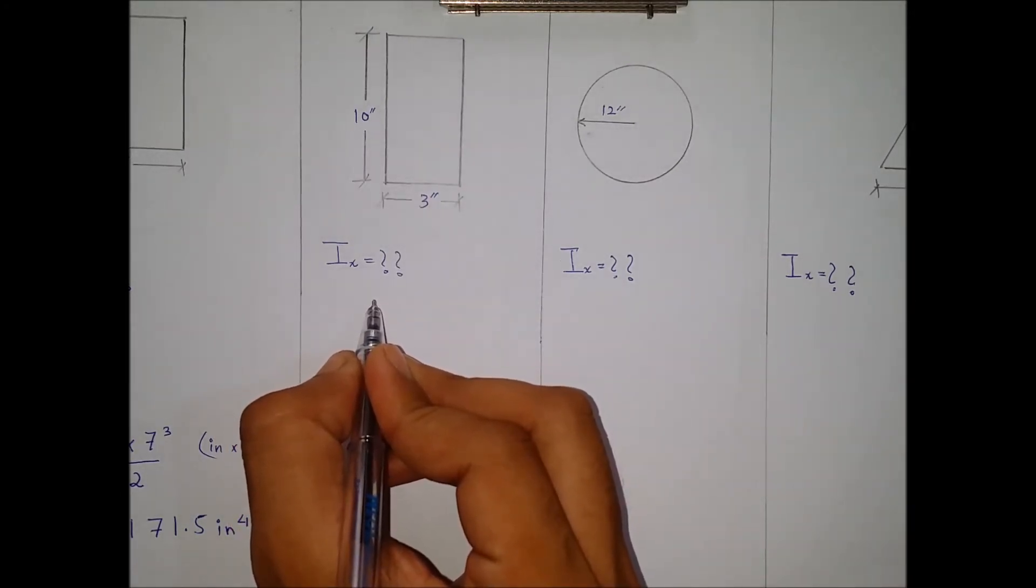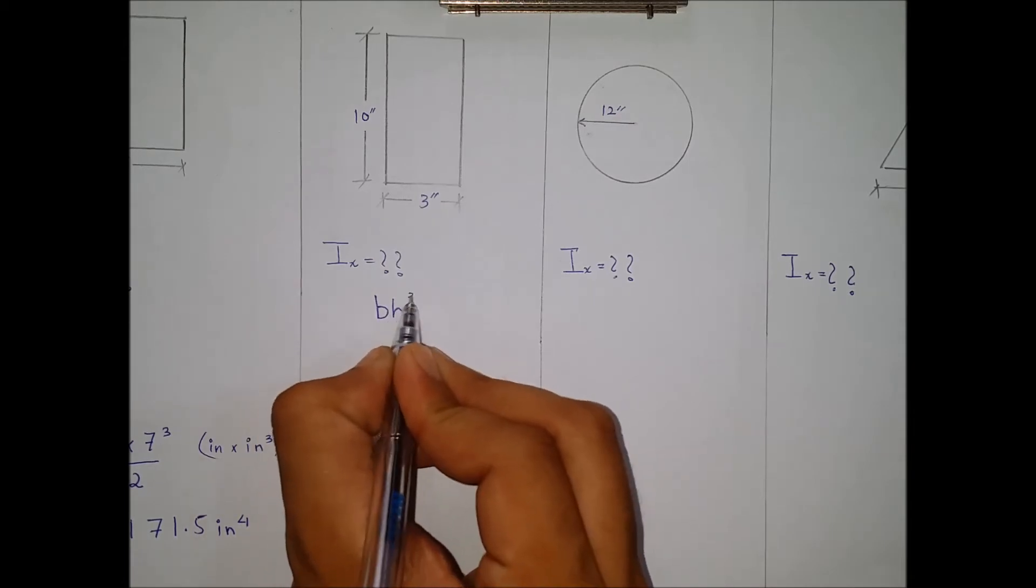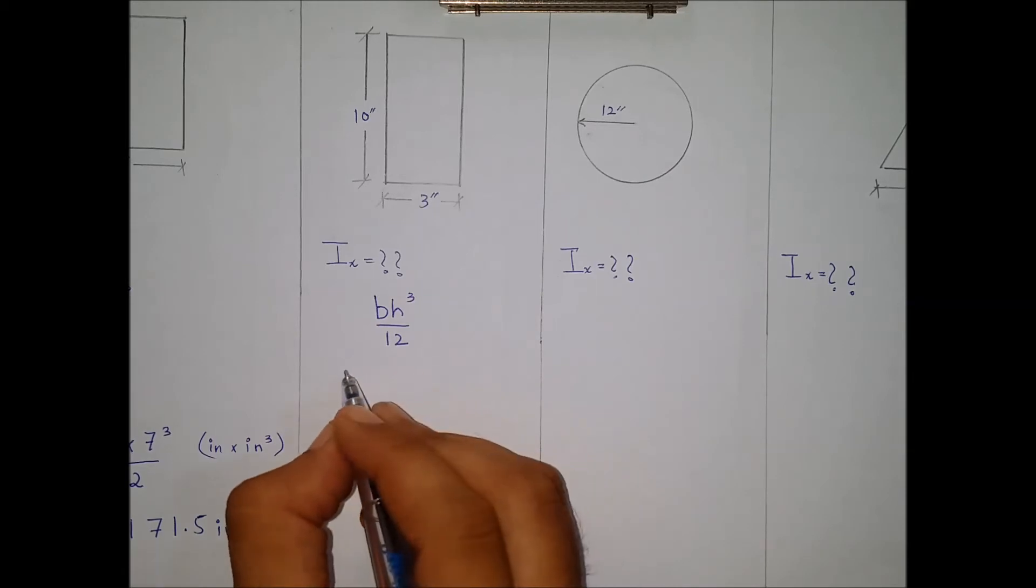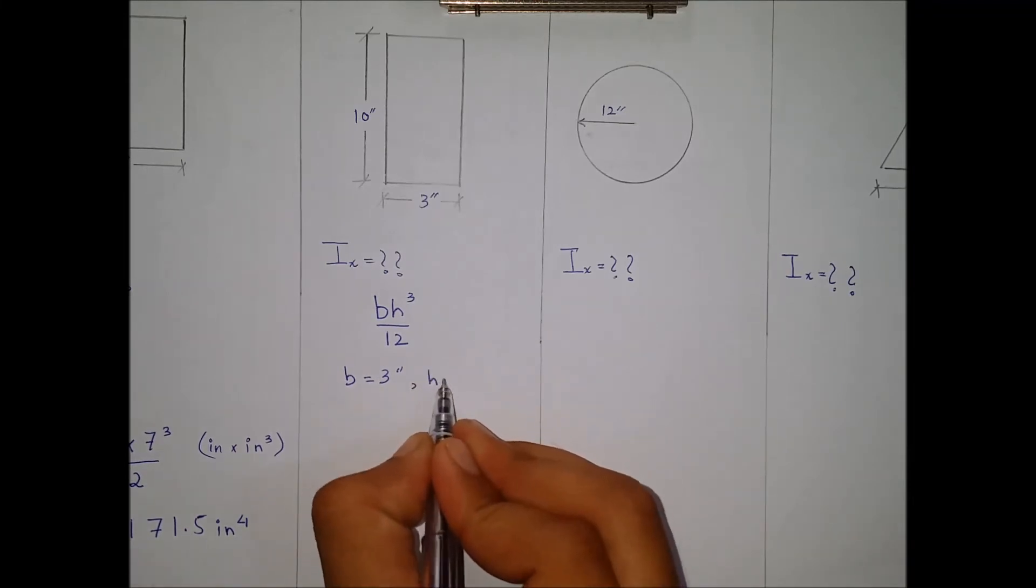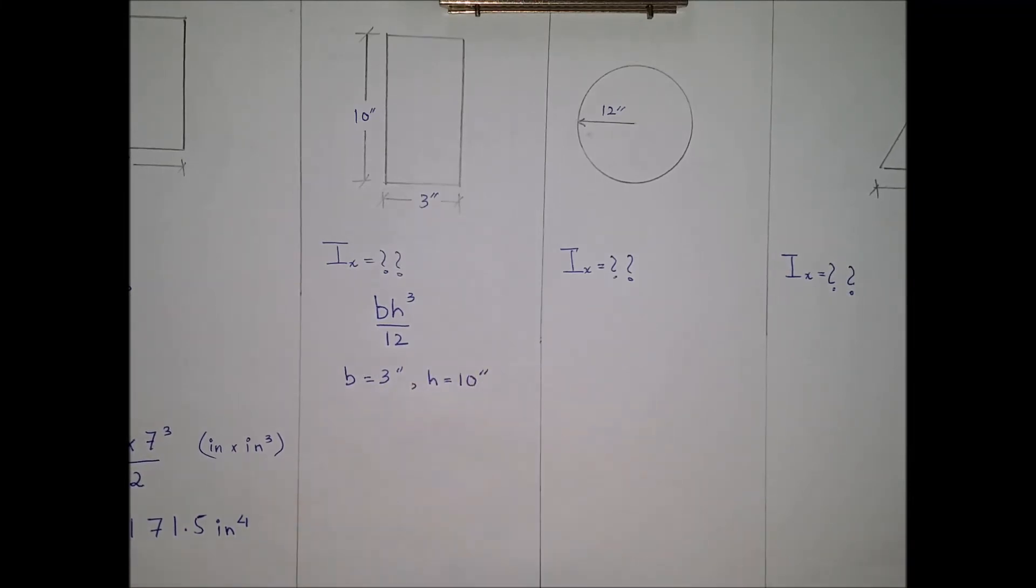Let's start with the second example. The same formula since it is a rectangle: bh³ over 12. The base in this case will be 3 inches and the height in this case will be 10 inches. Substituting these values in the formula, the value comes out to be 250 inch⁴, which is the required moment of inertia for the given shape.